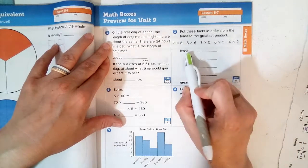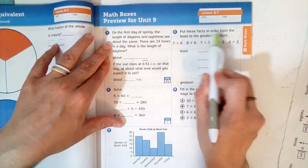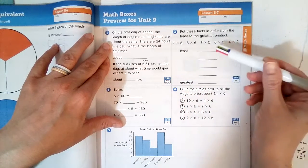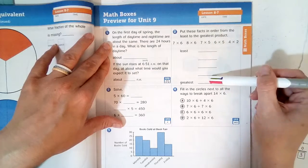Put the facts in order. So first, solve them. Then write the number model from smallest answer to biggest.